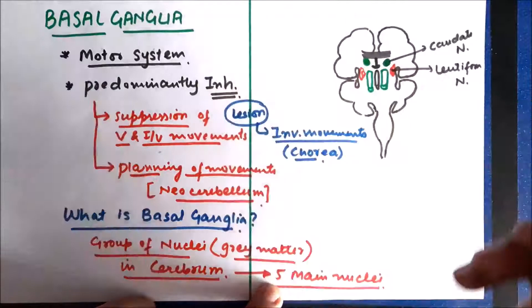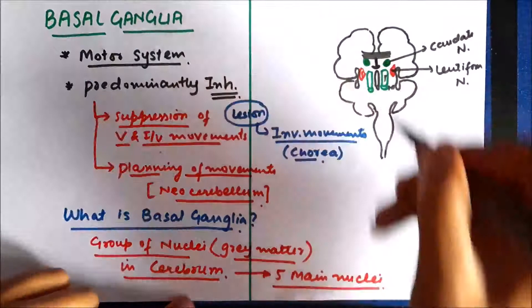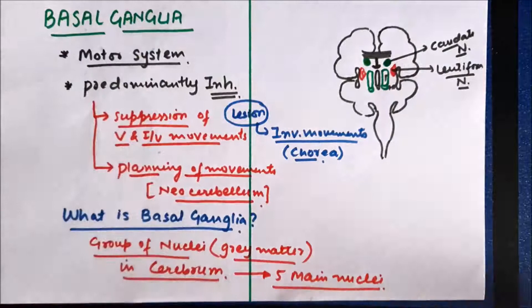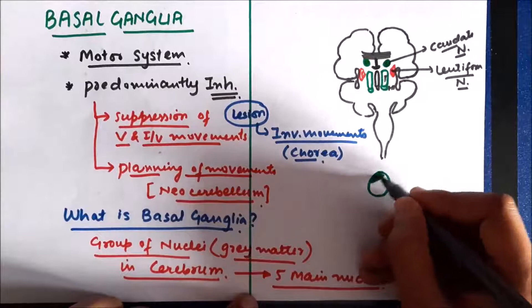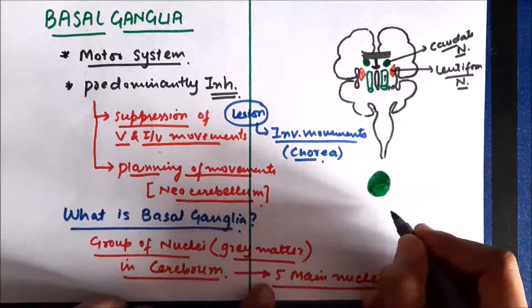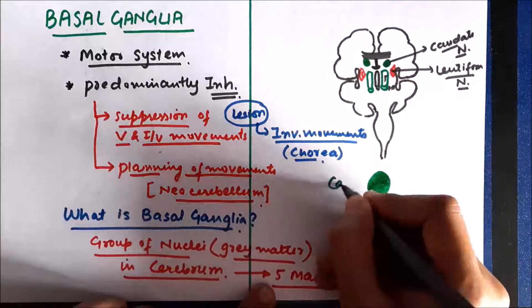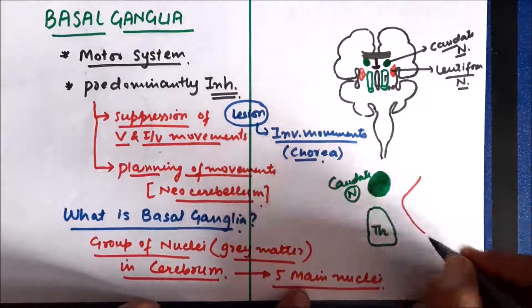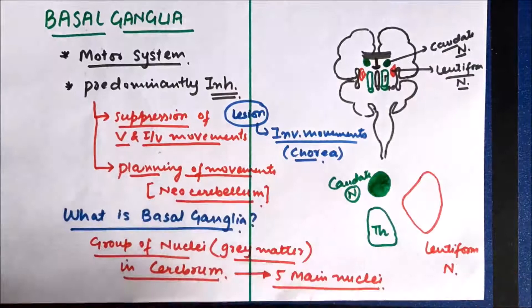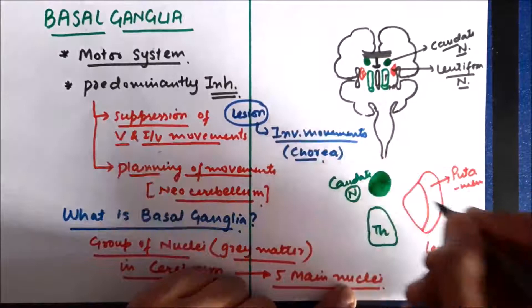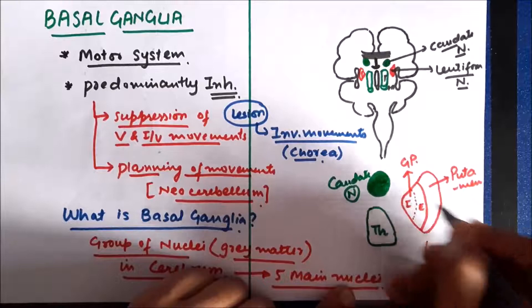In the magnified diagram, we can see the caudate nucleus, thalamus, and on the other side between thalamus and the lateral sulcus is the lens-shaped lentiform nucleus. The lentiform nucleus consists of two nuclei: the lateral one is known as the putamen and the medial one is known as the globus pallidus. Globus pallidus itself is divided into globus pallidus internus and globus pallidus externus. These nuclei are present on both sides of the brain.